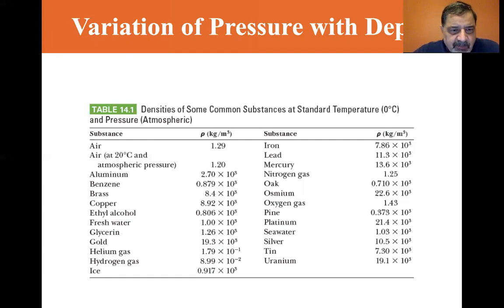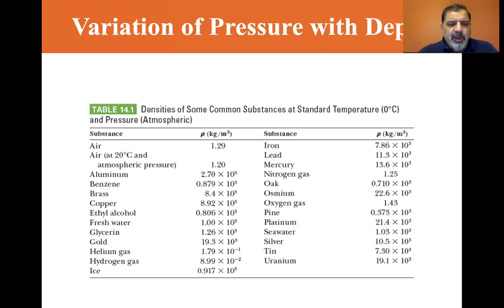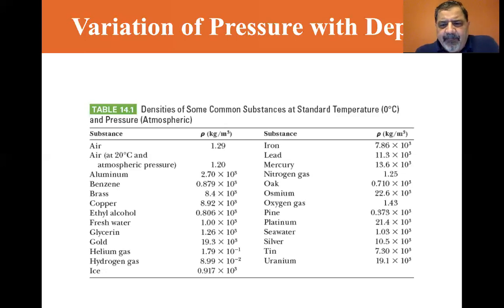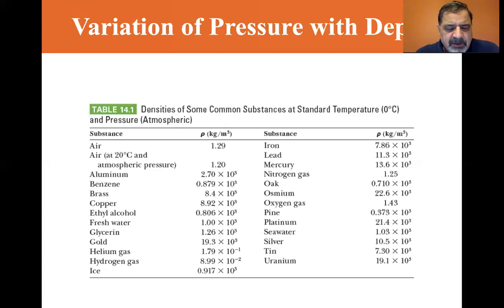Now let's look at some liquids. Fresh water is 1×10³ kg/m³, and sea water is 1.03×10³. That's about a thousand times more than gases, meaning there are a thousand more molecules per cubic meter in a liquid than in a gas.